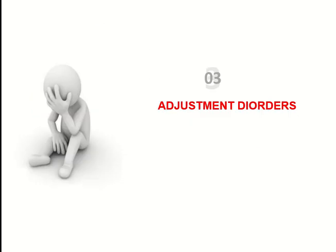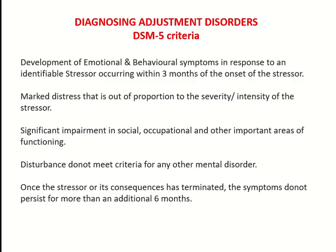Adjustment disorder is diagnosed when there is development of emotional and behavioral symptoms in response to an identifiable stressor occurring within three months of the onset of that stressor. The distress is out of proportion to the severity of the stressor, there is significant impairment in daily functioning, and the disturbance does not meet criteria for any other mental disorder. The typical hyperarousal and intrusion symptoms are absent. Common triggers include moving to a new place, change in environment, school changes, or diagnosis of an illness. Once the stressor or its consequences have terminated, symptoms do not persist for more than an additional six months.